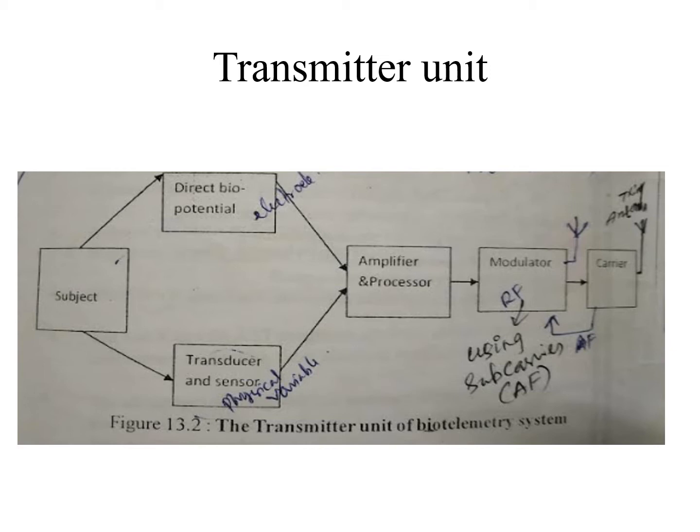The transmitter unit consists of a subject (patient), a direct bio-potential amplifier and processor, a modulator, a carrier, a transmitting antenna, and also a transducer and sensor. You already know about different types of transducers and sensors.